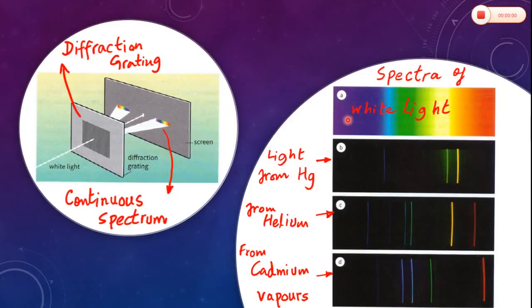A continuous spectrum like the spectrum of white light shows that it consists of a range of wavelengths from around 4 × 10^-7 meters for violet to around 7 × 10^-7 meters for red.